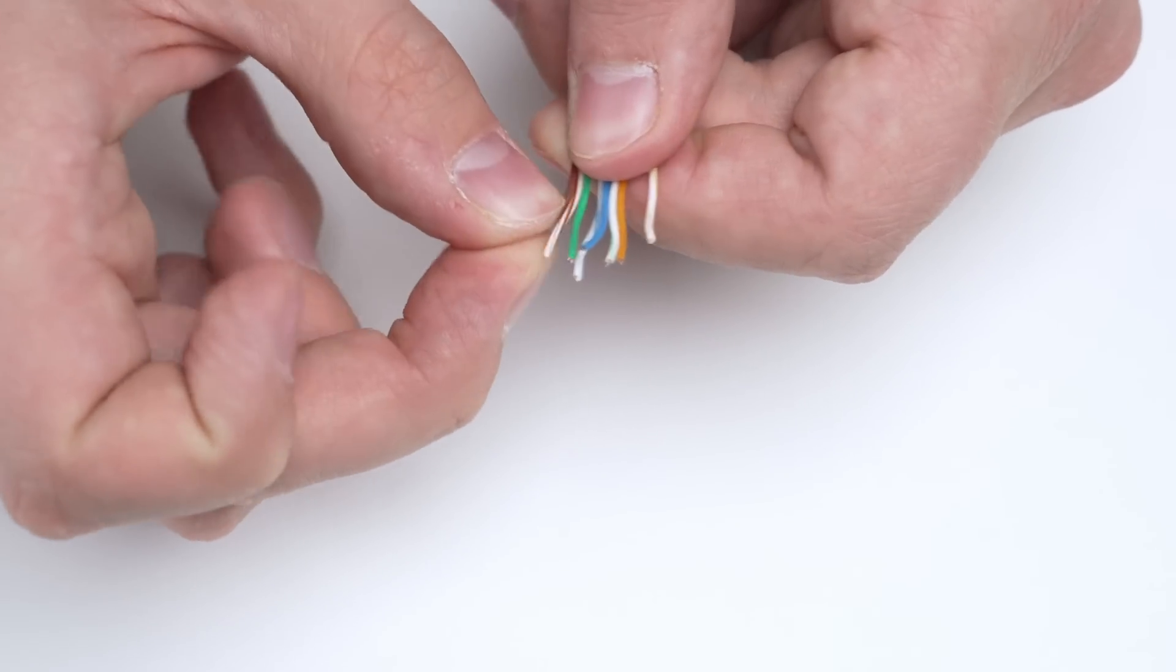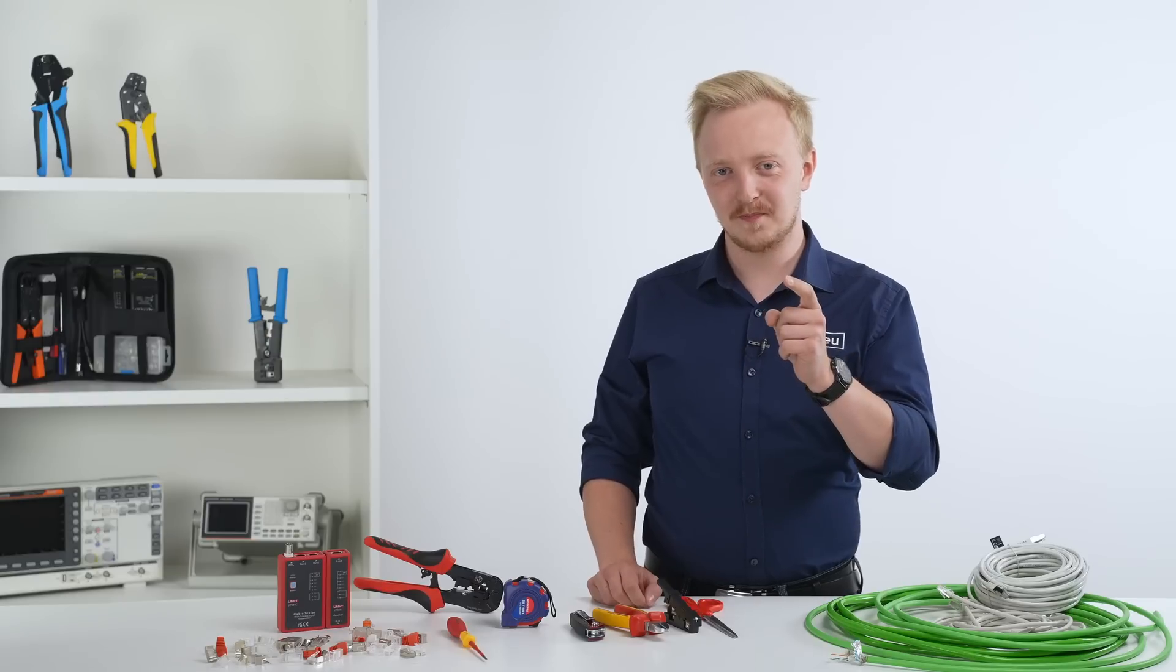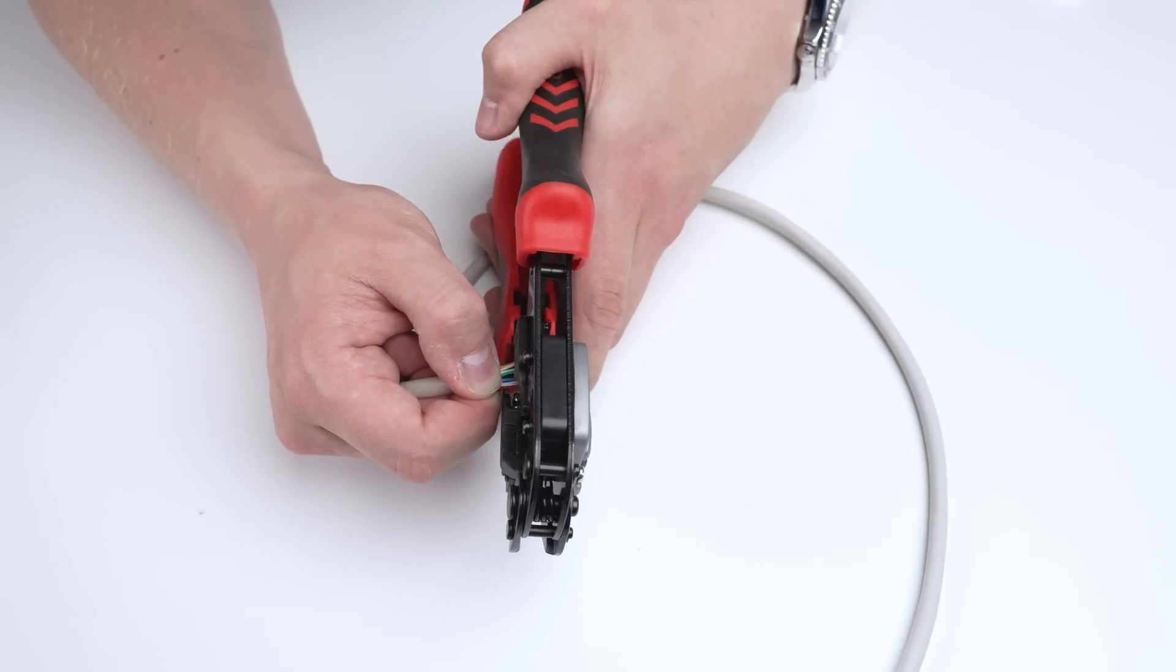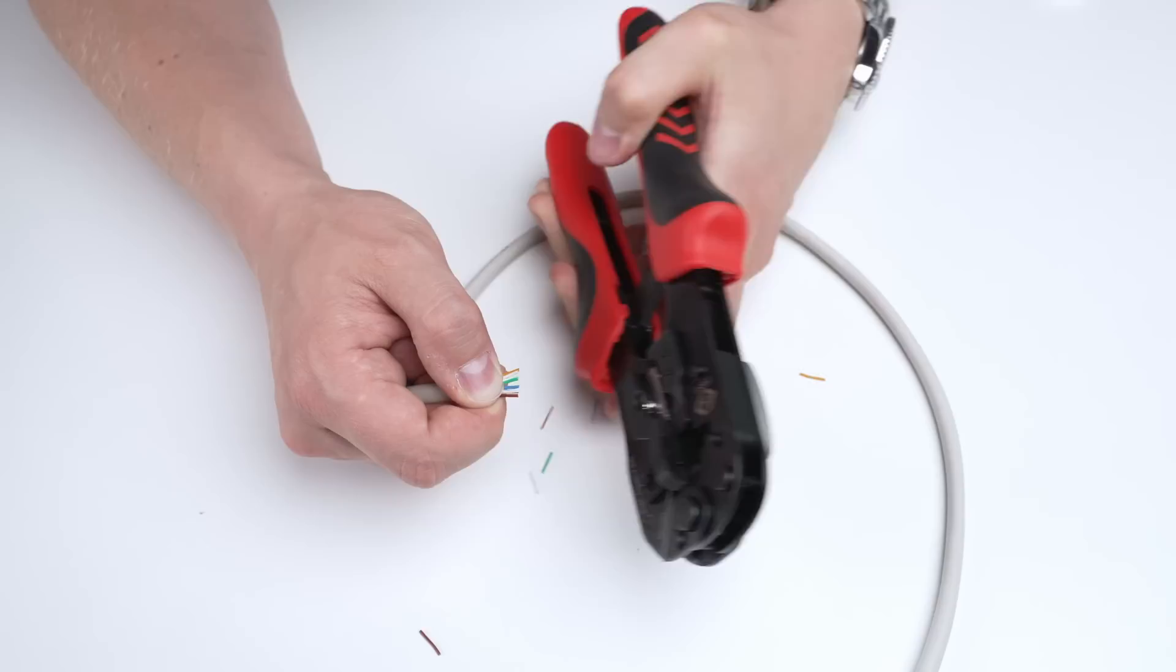Here's a tip for you. You can now take the crimper and cut the wire ends to maintain even length.